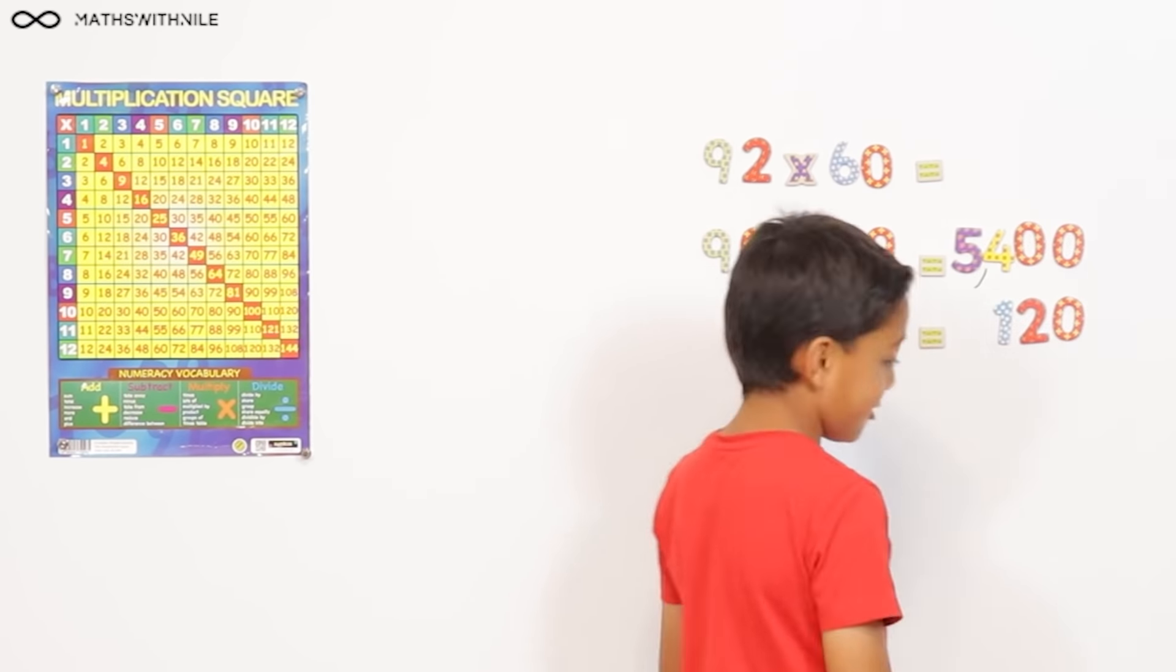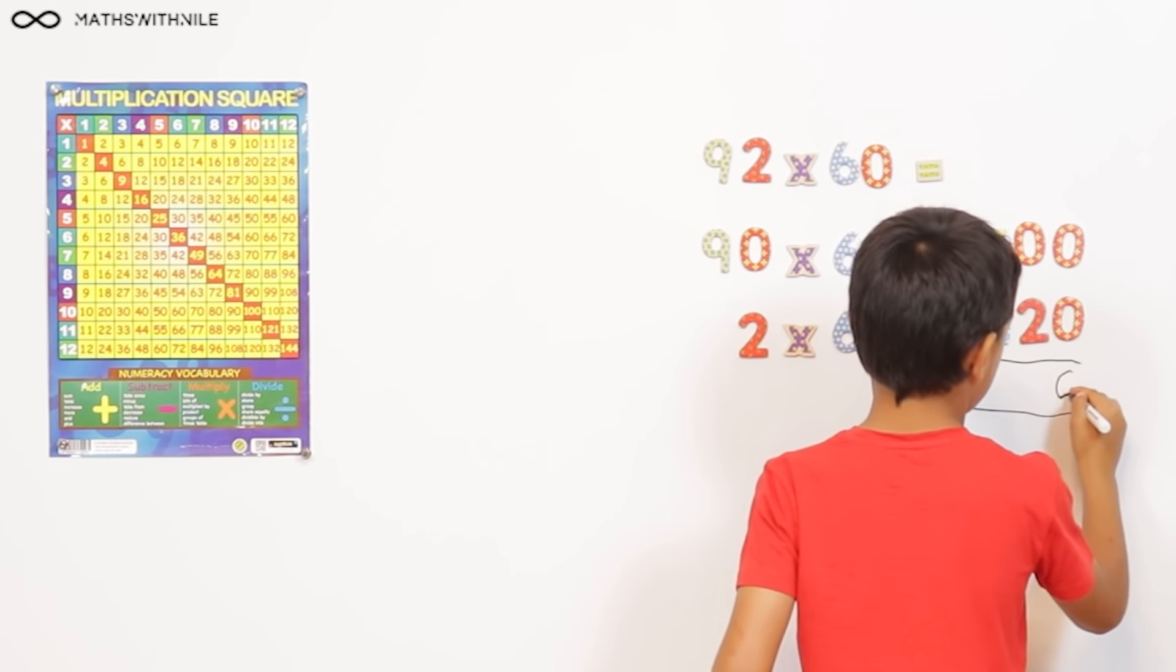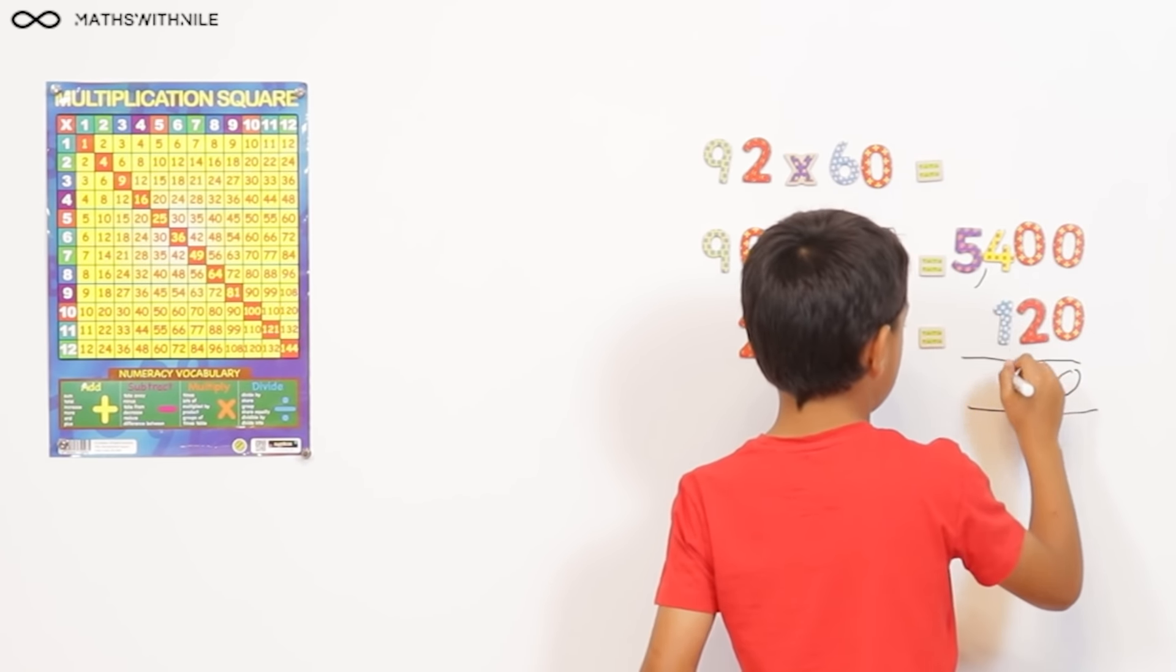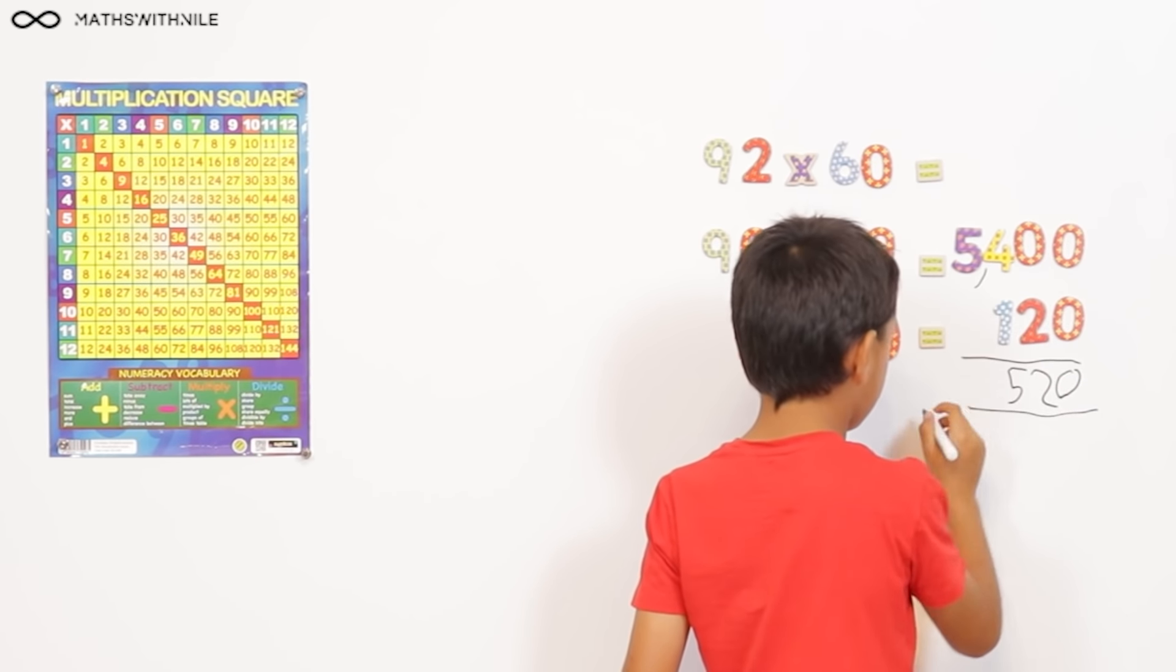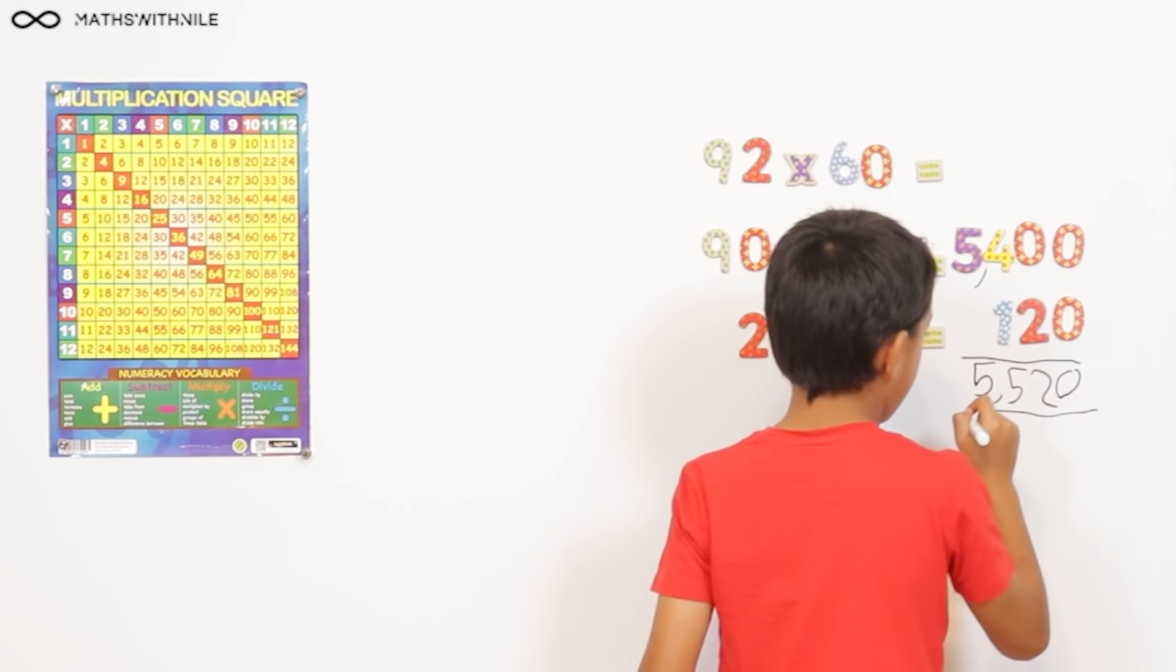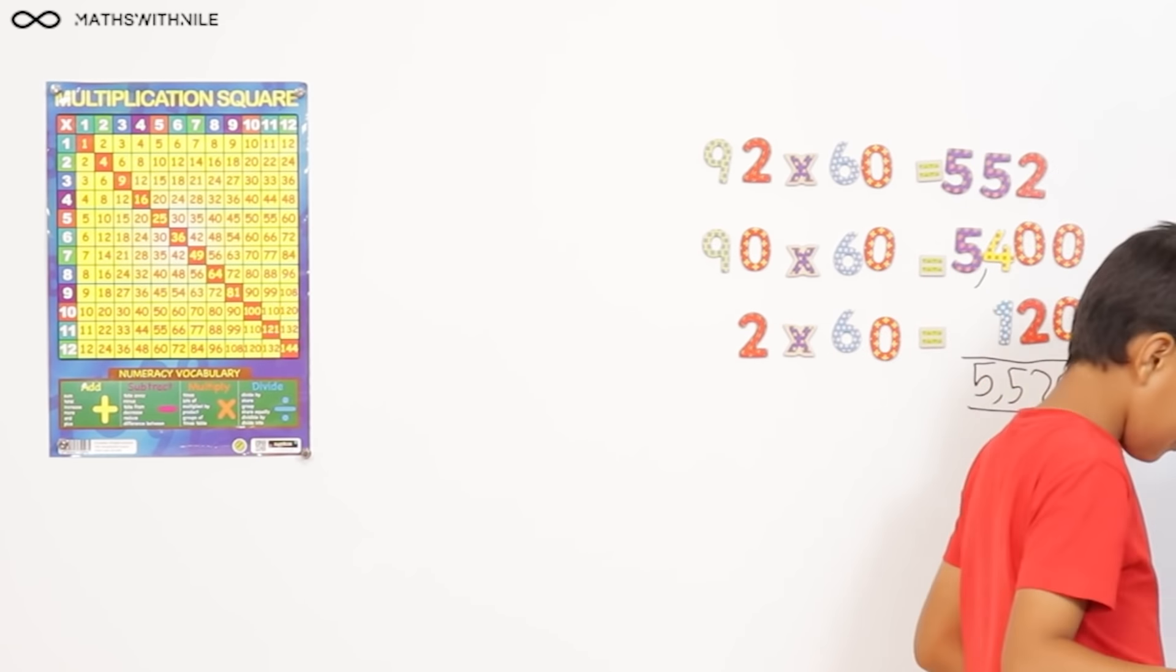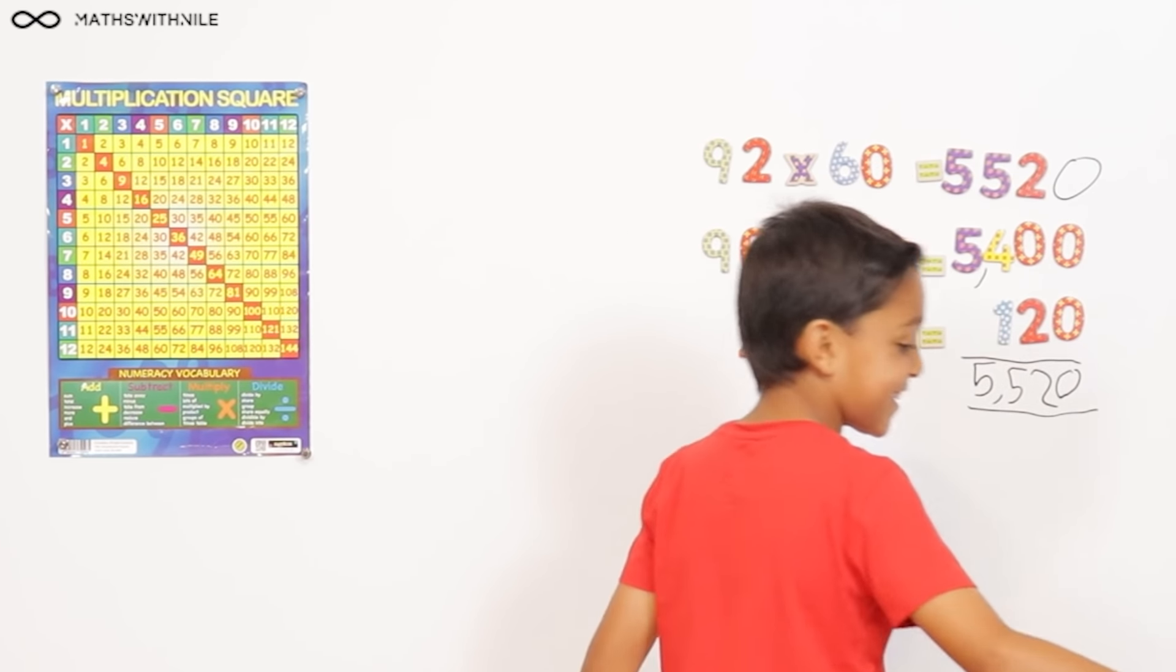0 and 0 equals 0. 0 and 2 equals 2. 4 and 1 equals 5. 5 and 0 equals 5. Okay. So what's the answer? 5,520. Okay, 5,520.